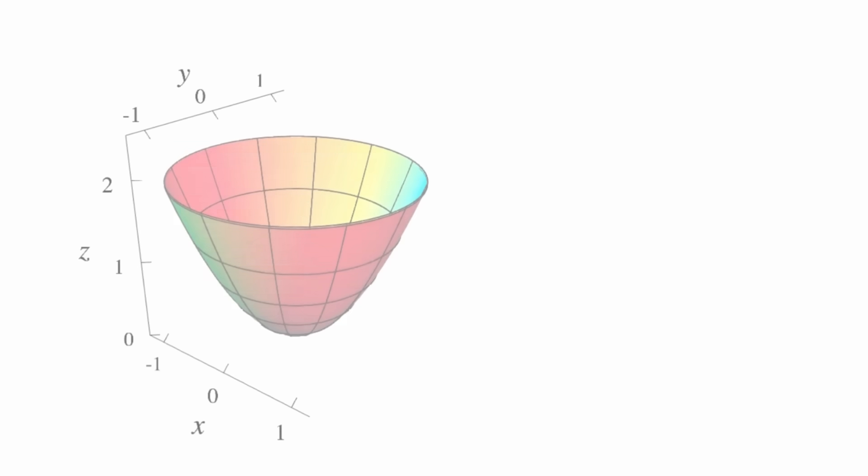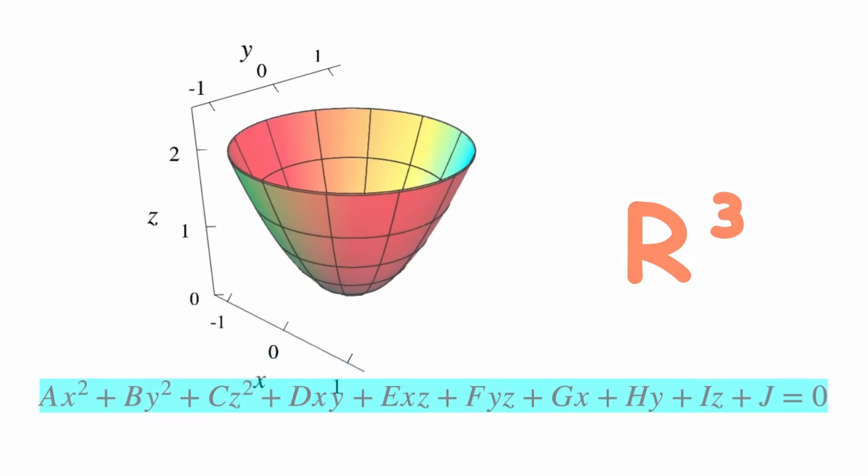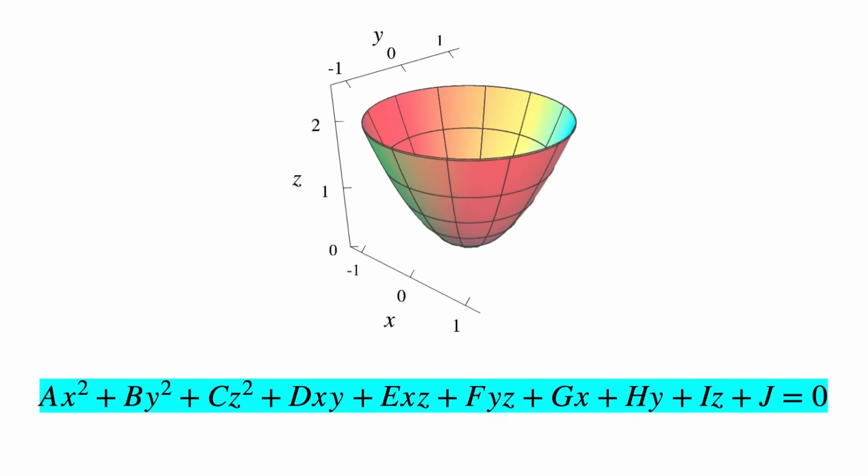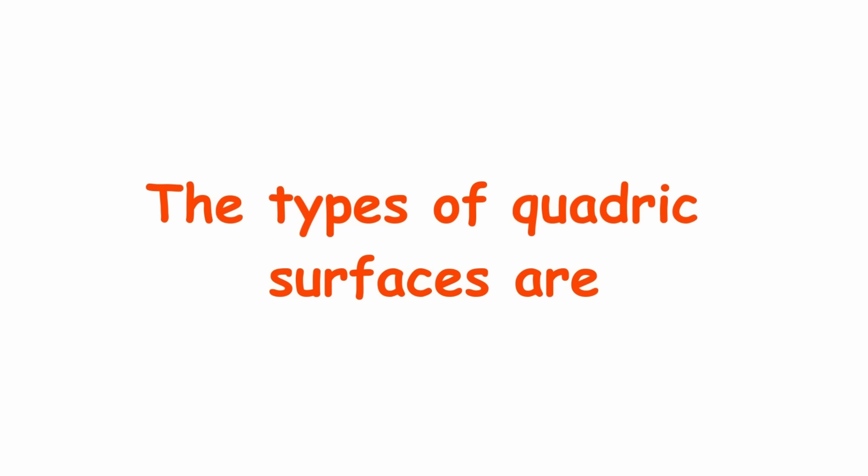Quadric surfaces are surfaces in three-dimensional space R cubed whose general equation includes constants A through J. Quadric surfaces are the three-dimensional extension of conic sections in the plane.